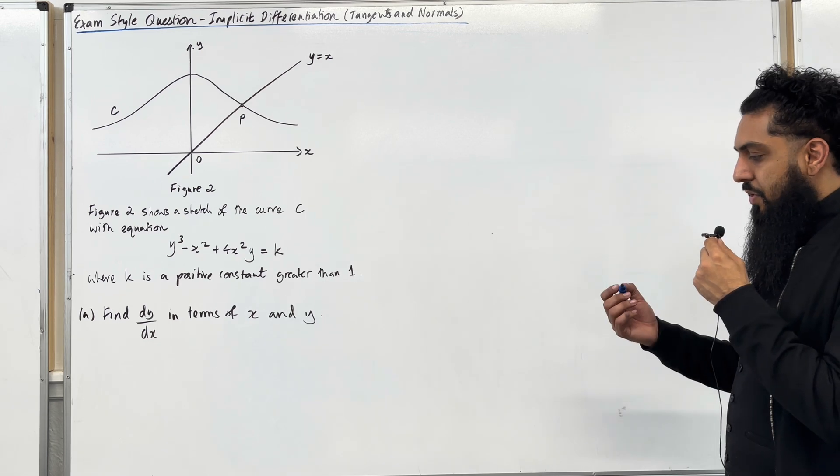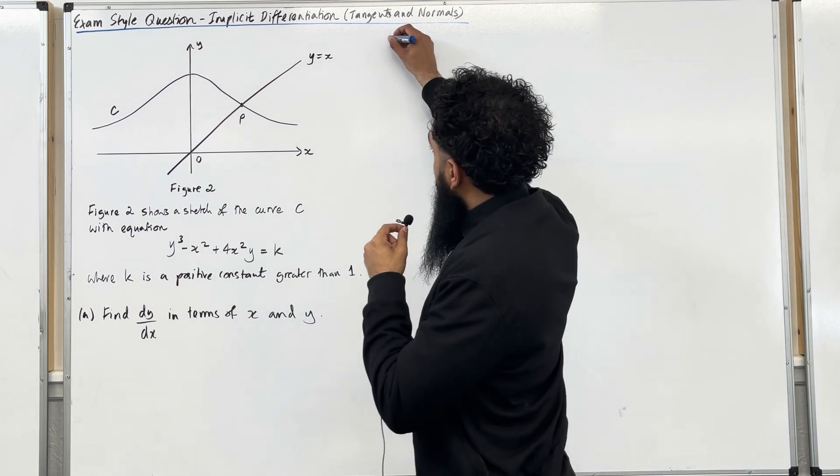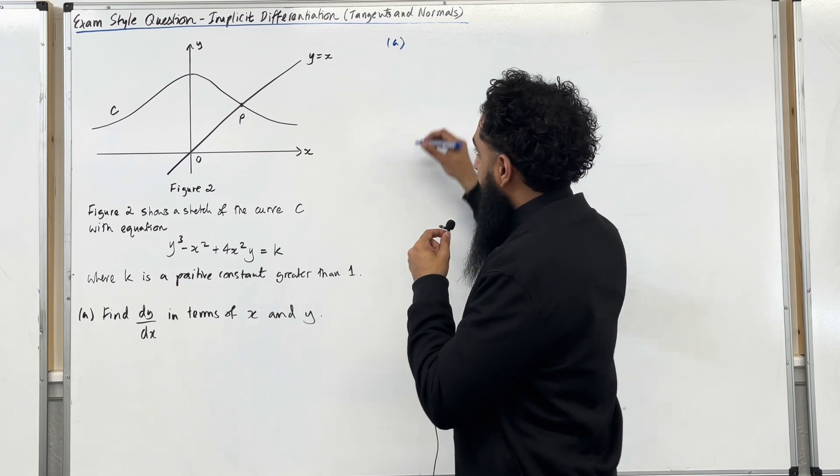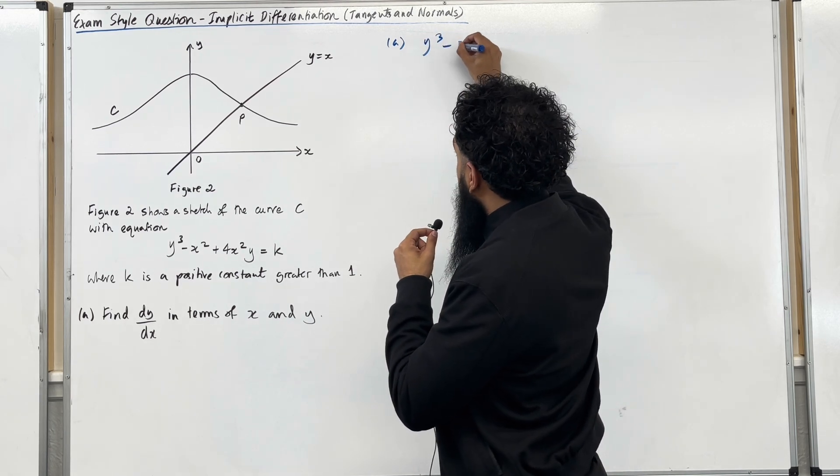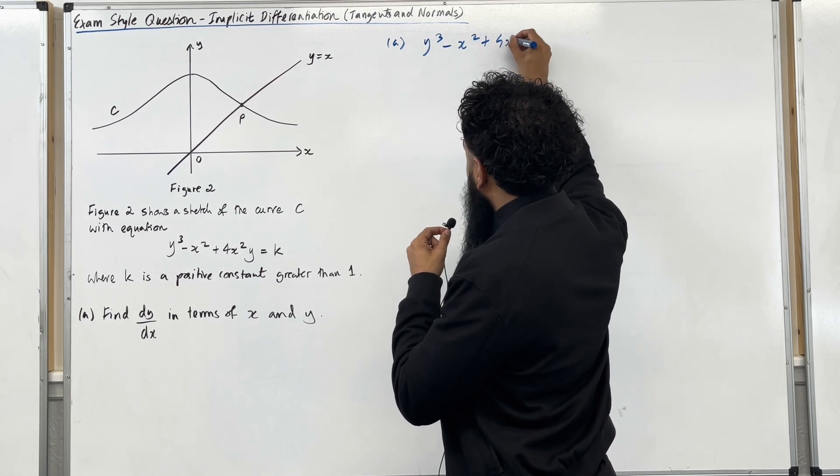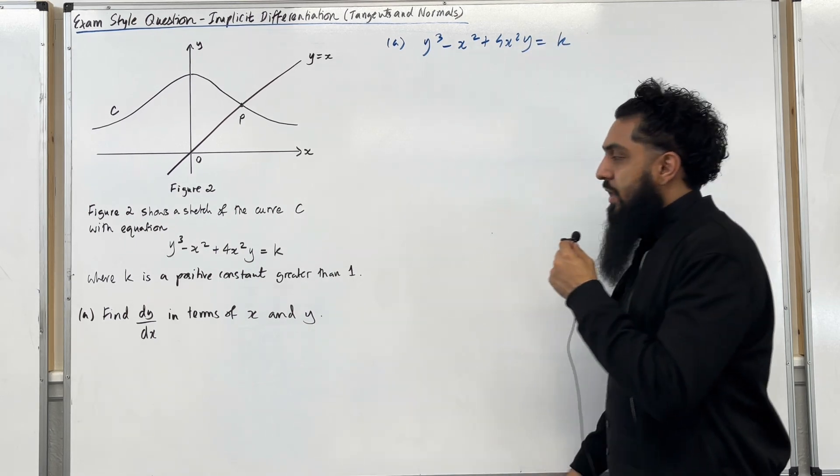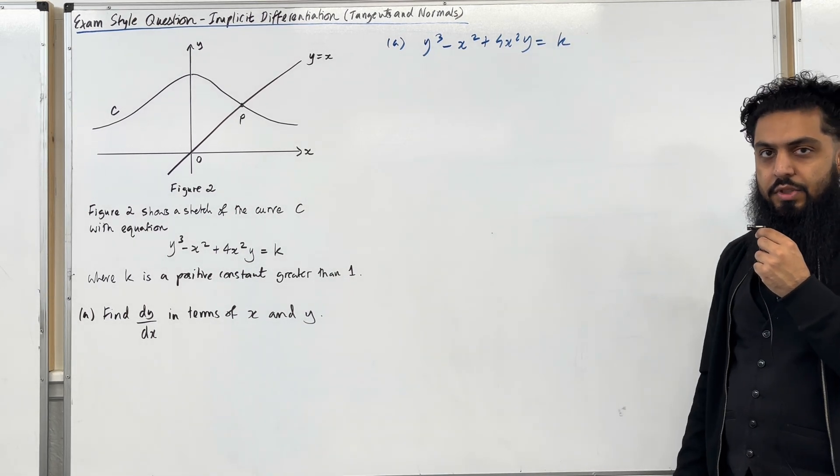Let's have a look at the solution to part A. So the implicit equation is y cubed minus x squared plus 4x squared y equal k. To differentiate this I need to use implicit differentiation.